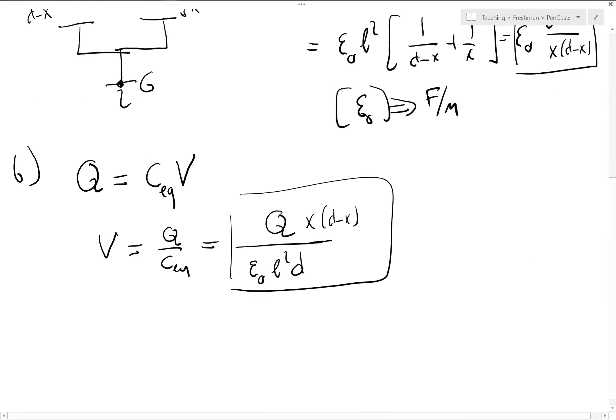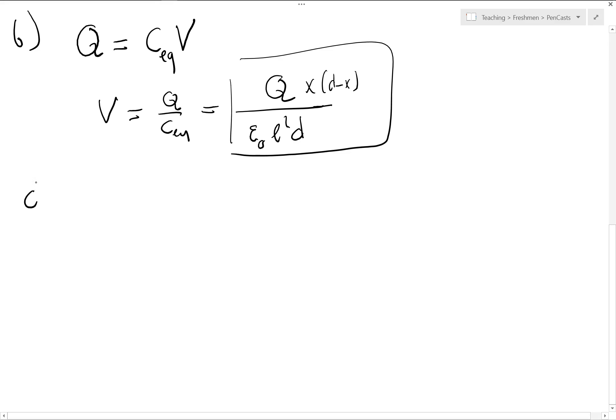What is the energy stored in the system? Okay, the energy stored in the system is, I can either say it's 1 over 2C V squared, or maybe just write it 1 over 2Q squared over C. So it's going to be 1 over 2Q squared divided by epsilon 0, L squared, D over X times D minus X.